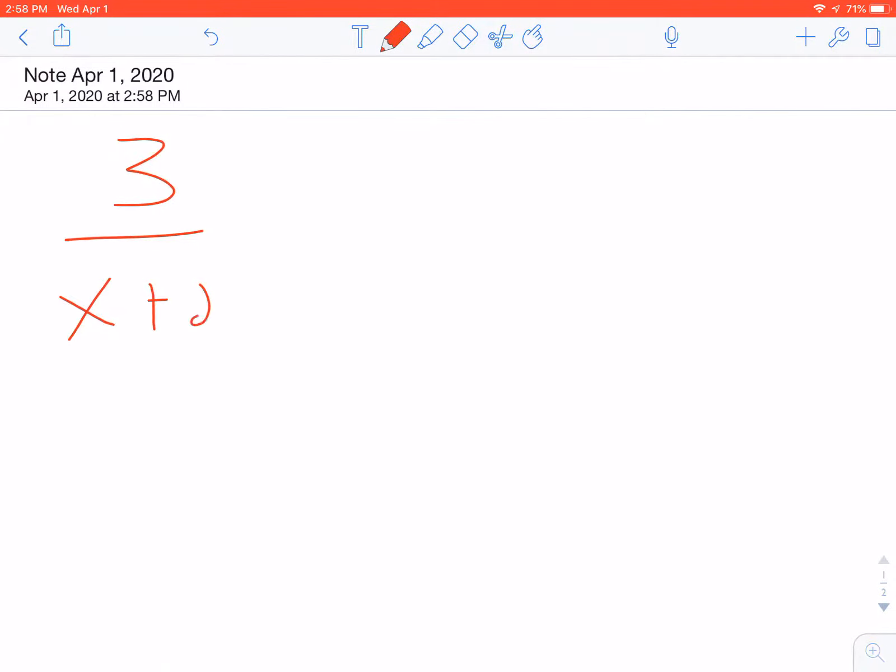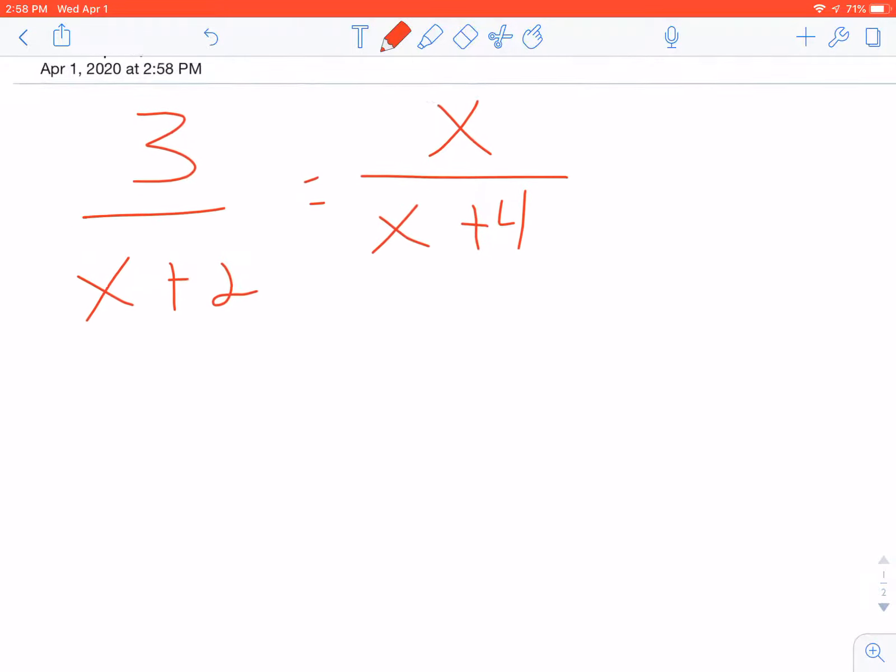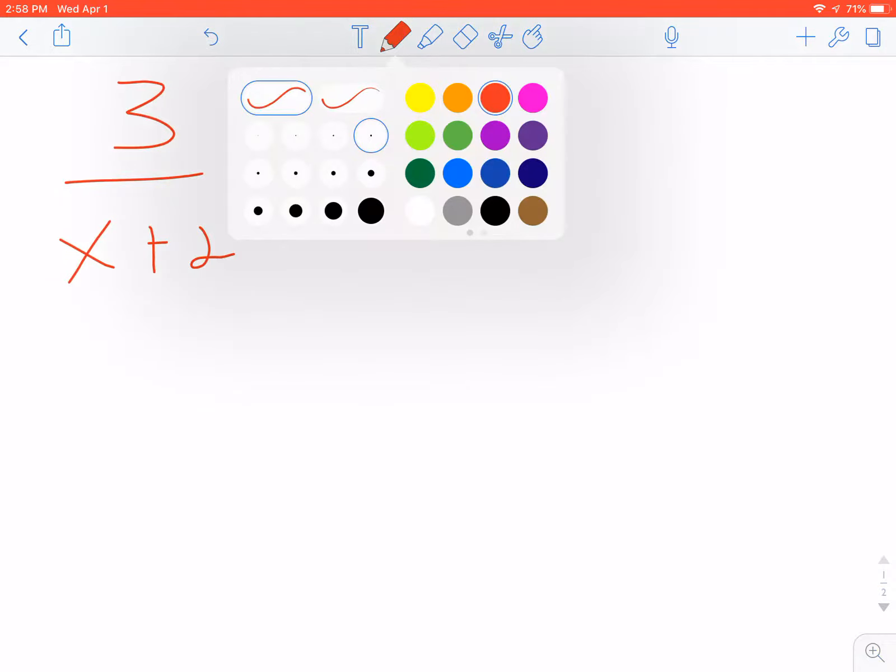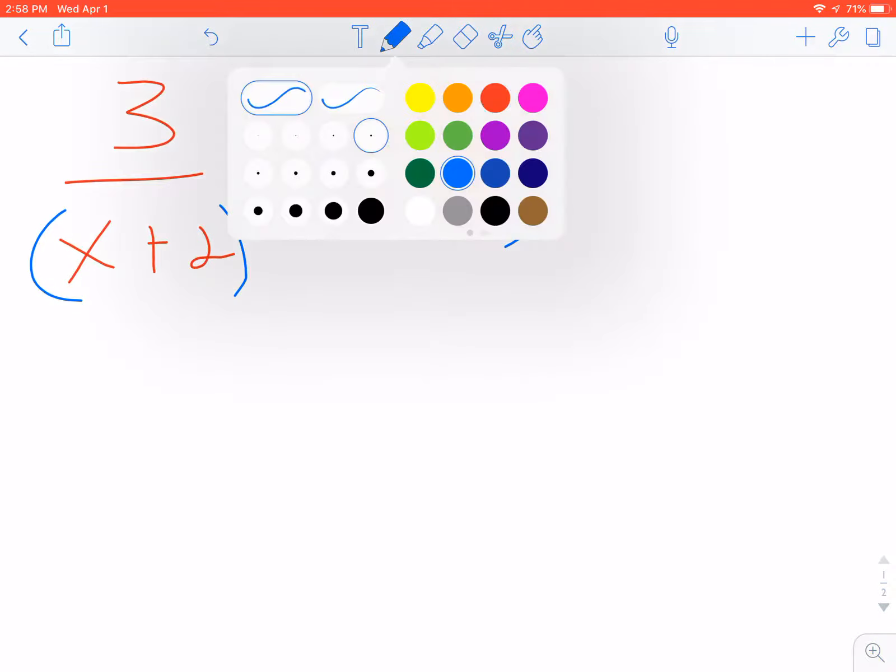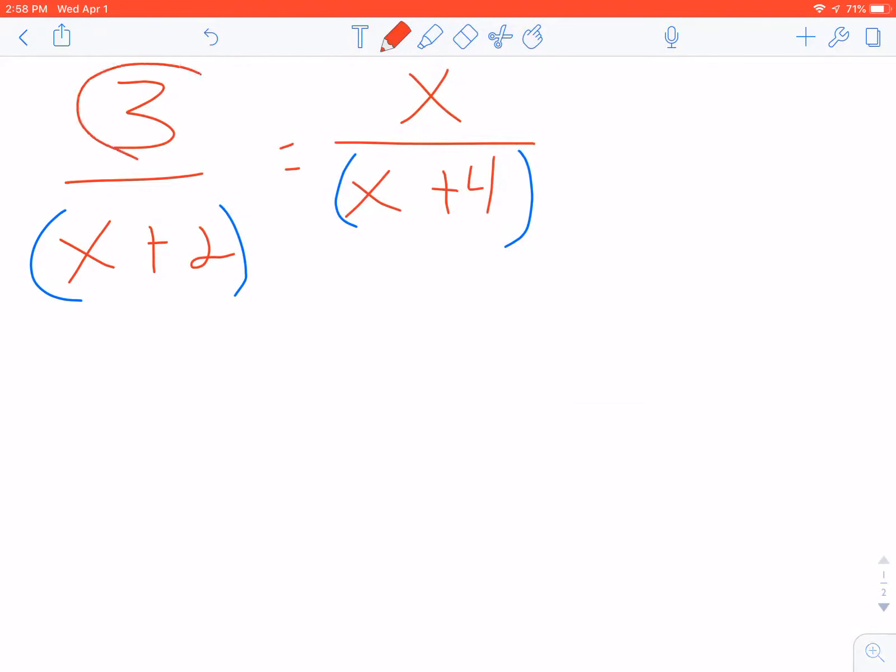Our setup was 3 compares to x+2 as x compares to x+4. Now the first thing you should do whenever you have binomials in your proportion, you want to put your parentheses around them. What that does is it allows me to remind myself that when I cross multiply I'm going to have to distribute.